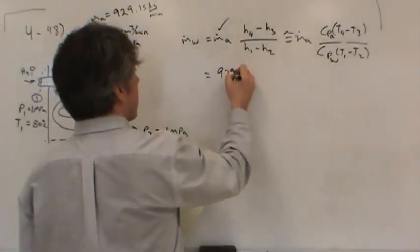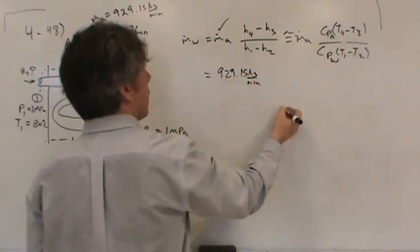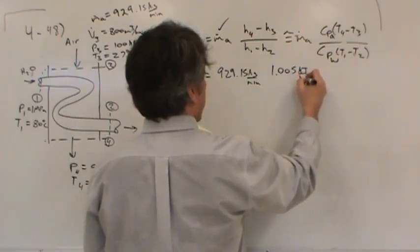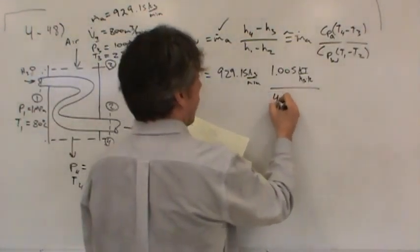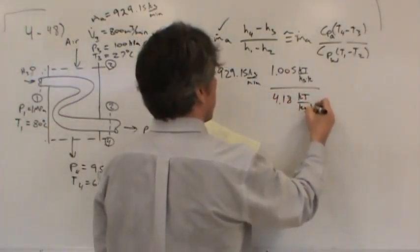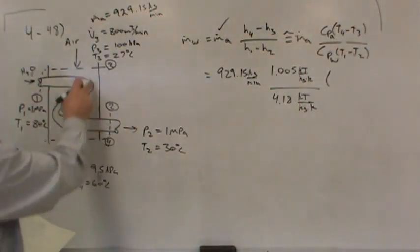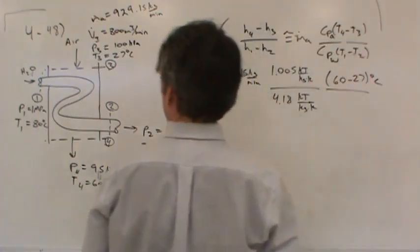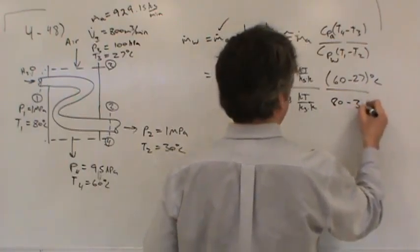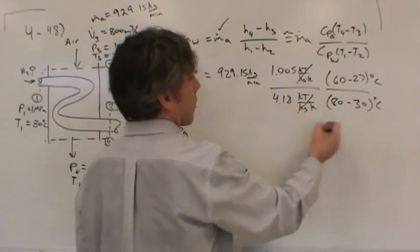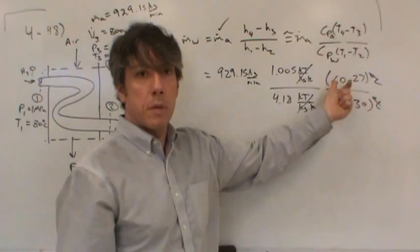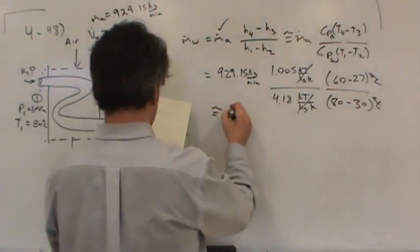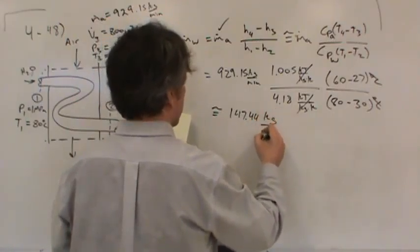So let's see what happens. Well, the mass flow rate of the air, again, 929.15 kilograms per minute. The heat capacity of air, if you don't know it right off, it's in table A2. The heat capacity of the air is 1.005 kilojoules per kilogram per kelvin. The heat capacity of water is about 4.18 kilojoules per kilogram per kelvin. The temperature change, T4 less T3 would be 60 less 27. That's degrees Celsius, of course. The temperature change of the water, T1, 80, less T2, 30. Notice the kilojoules per kilogram per kelvin go away. The degrees Celsius go away. Did I make a mistake? Should I have used kelvin for these temperatures? It doesn't matter. It's just a difference. That's right. Good job. So the mass flow rate of the water, then, comes out to about 147.44 kilograms per minute.